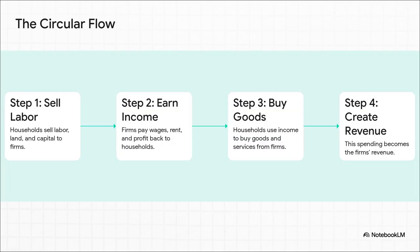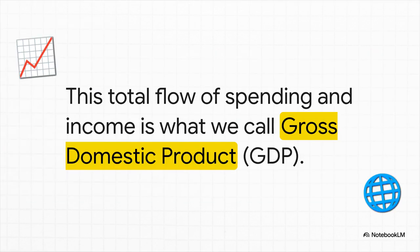That was just one lawn. Now let's zoom out and imagine millions and millions of transactions like that happening every single day. What you get is this amazing circular flow of money. Households sell our labor to companies; the companies pay us wages — that's our income. And then we turn right around and use that income to buy stuff from those very same companies. Our spending becomes their revenue. It's just this giant continuous loop. And that massive nonstop flow of money and value has a name you've definitely heard a million times: it's gross domestic product.